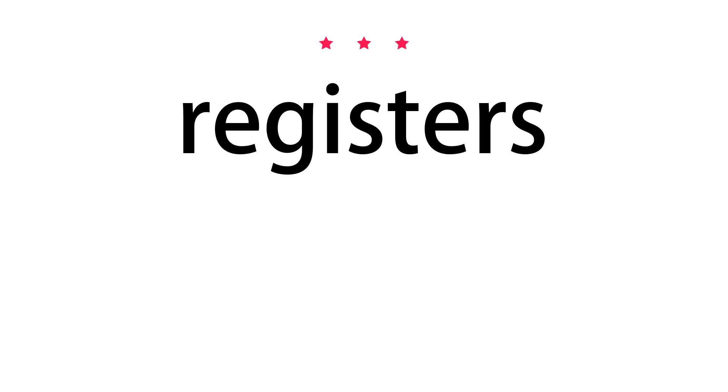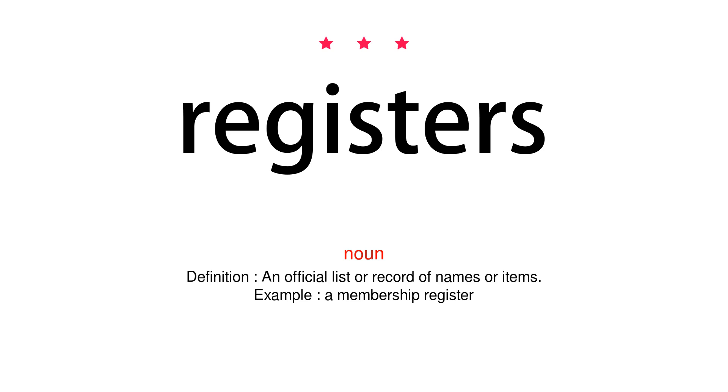Registers. Noun. Definition: An official list or record of names or items. Example: a membership register.